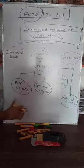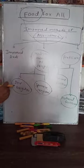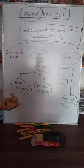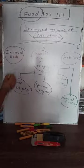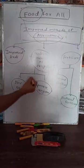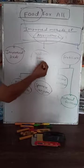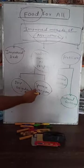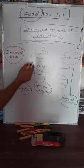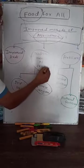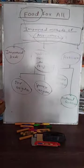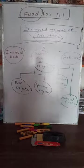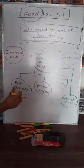When we study any topic, we need to understand what falls under it. Improved methods of agriculture includes: improved seeds, modern methods of irrigation — which are drip irrigation and sprinkler irrigation — and fertilizers. I will explain each of these.